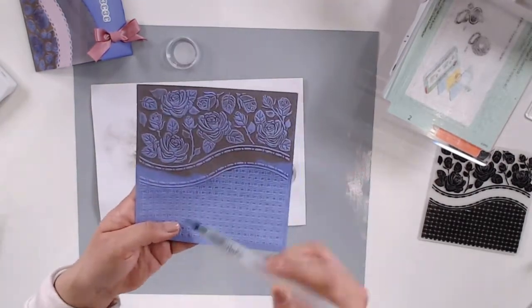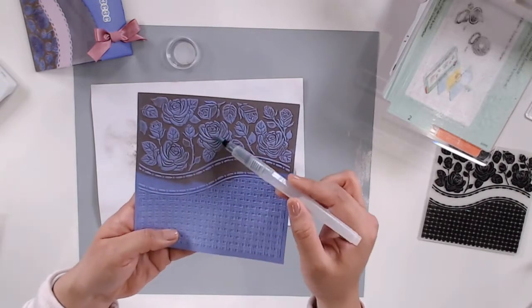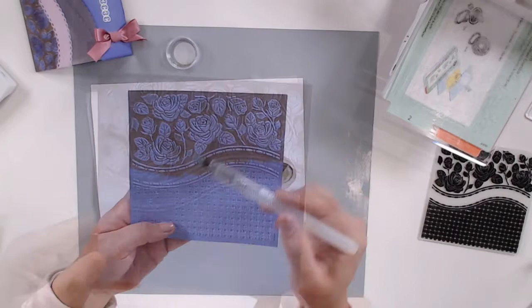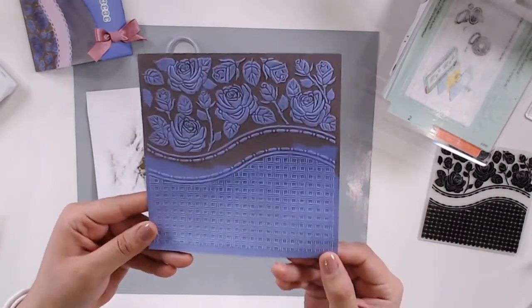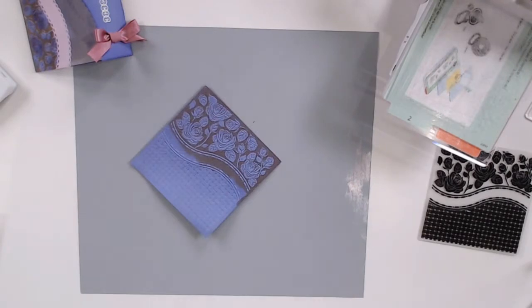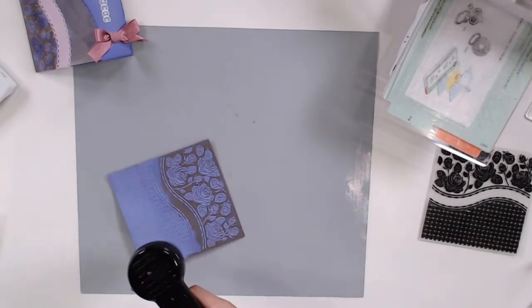I'm going to swipe away any excess powder that got on the raised part of my design using a dry brush. I'm going for a letterpress effect so I don't want my roses to be golden, just the background.